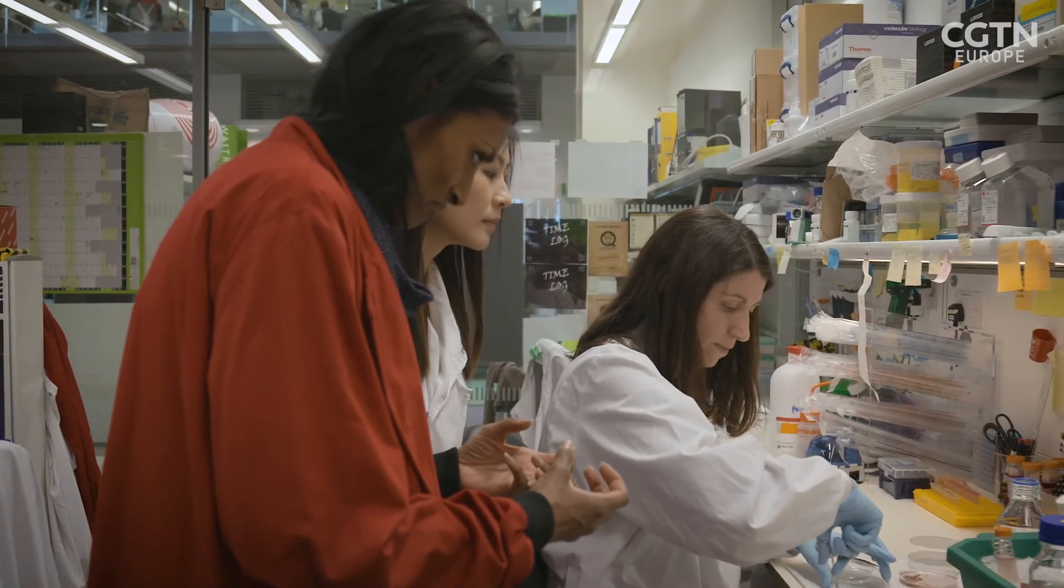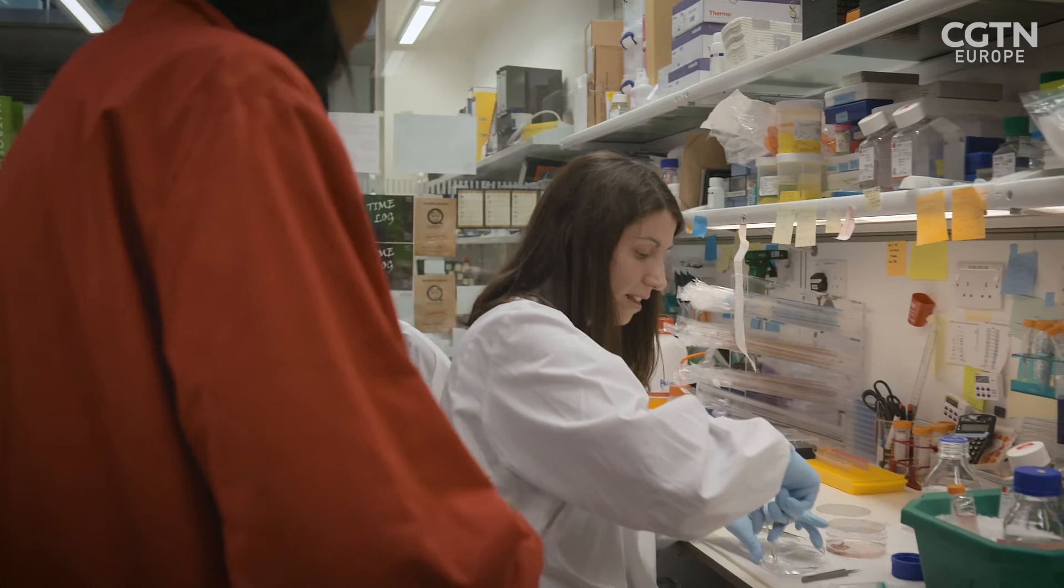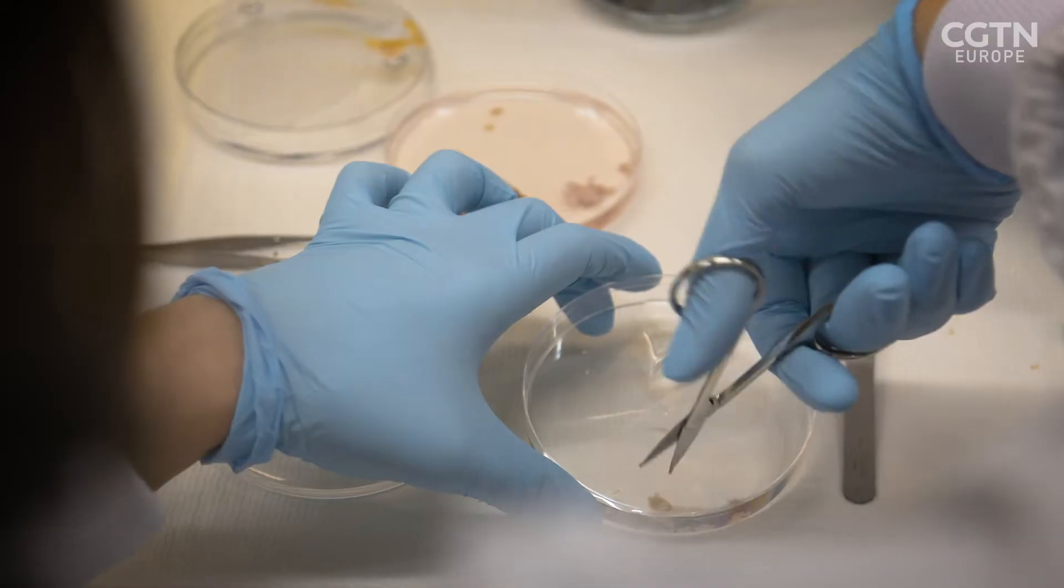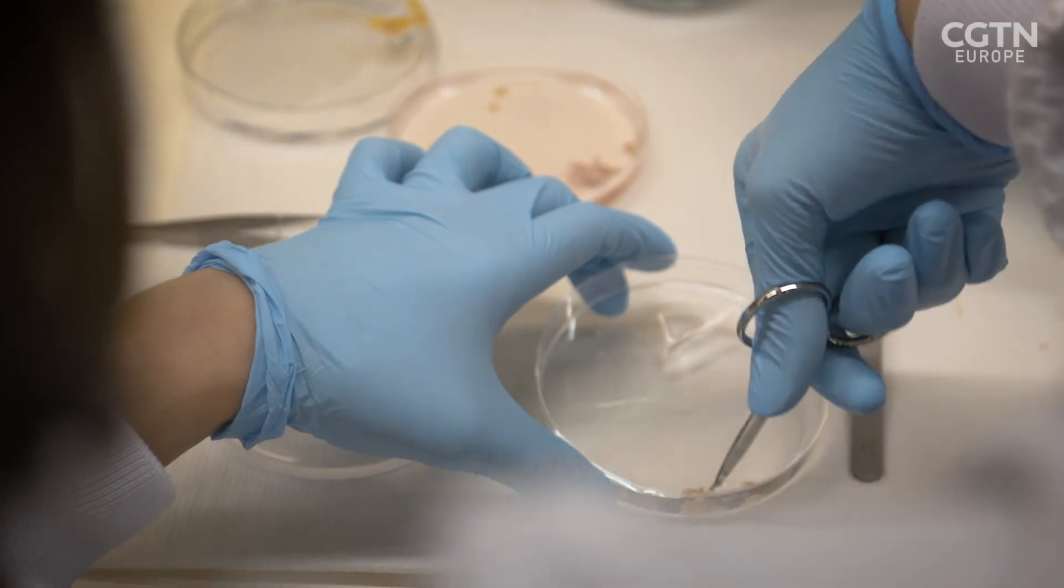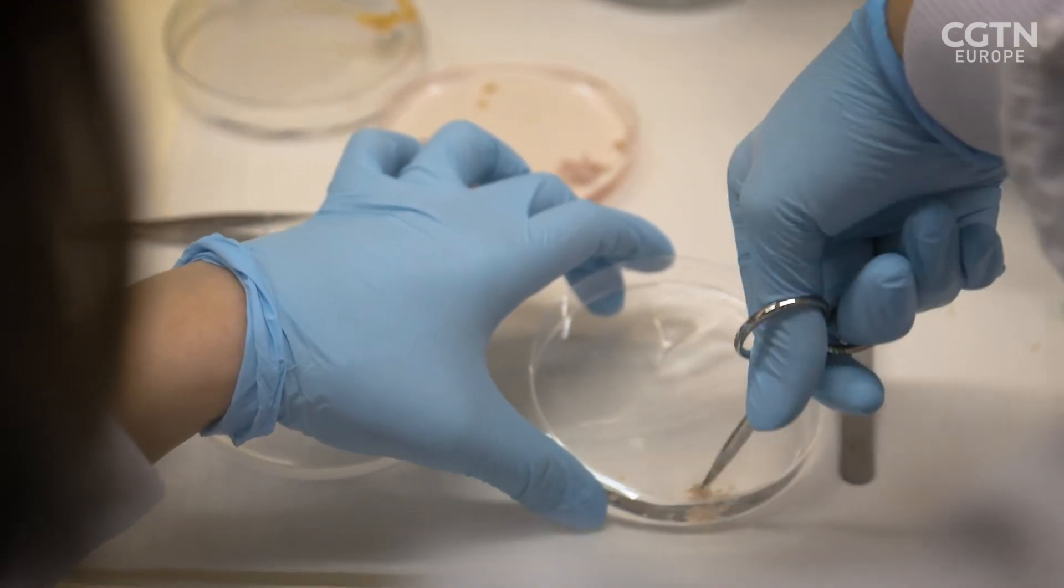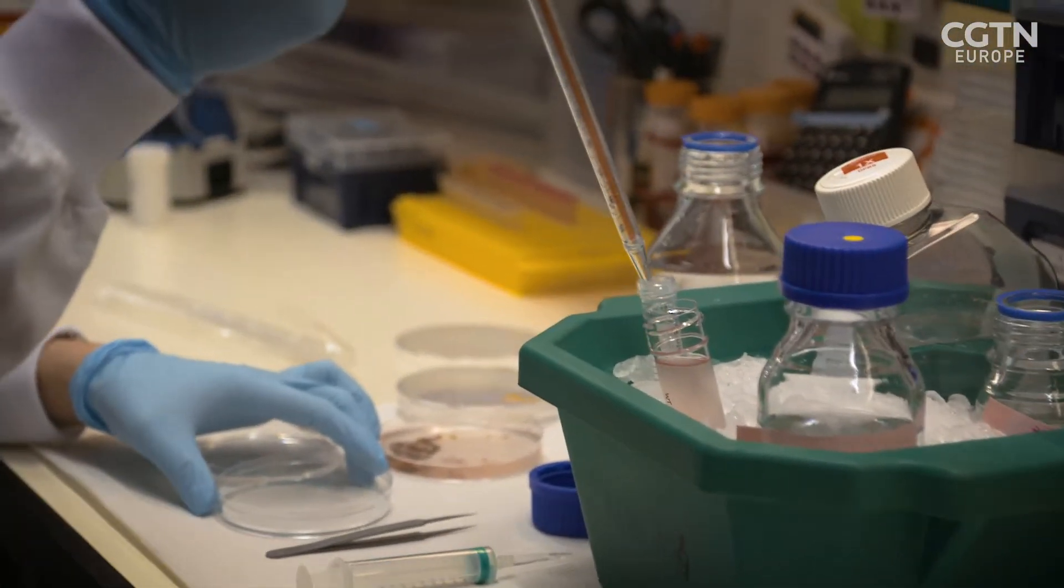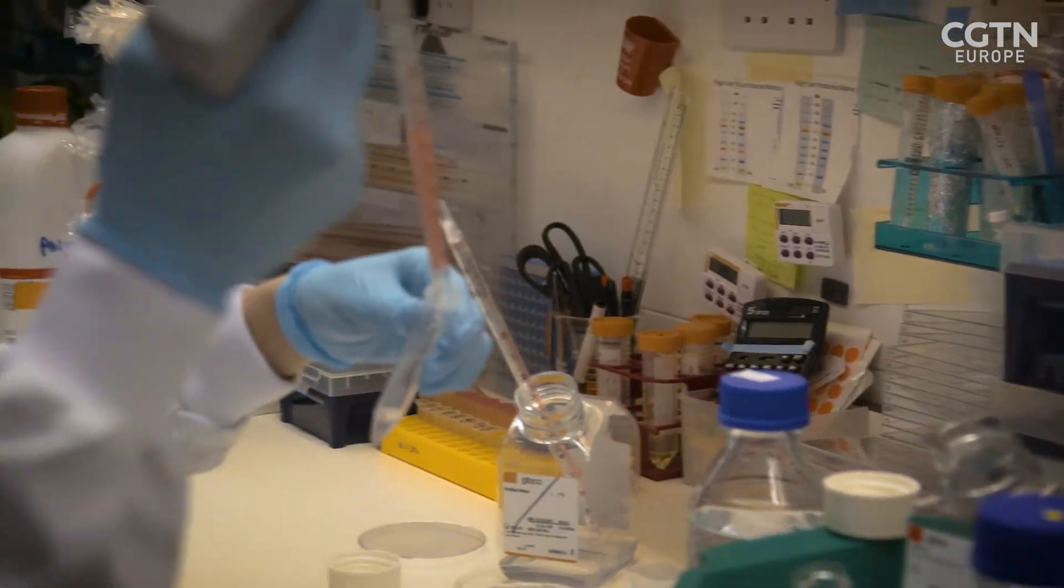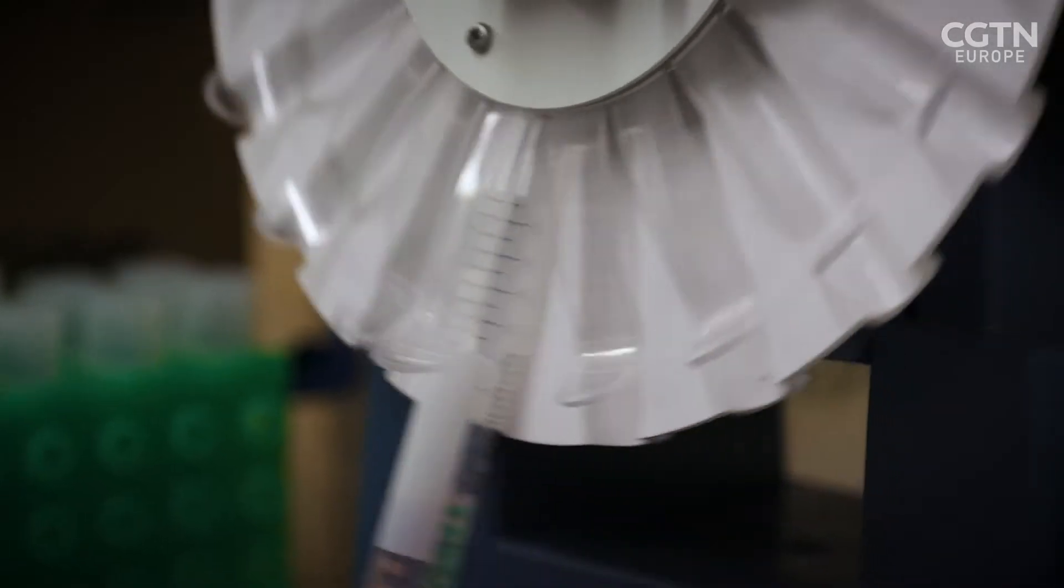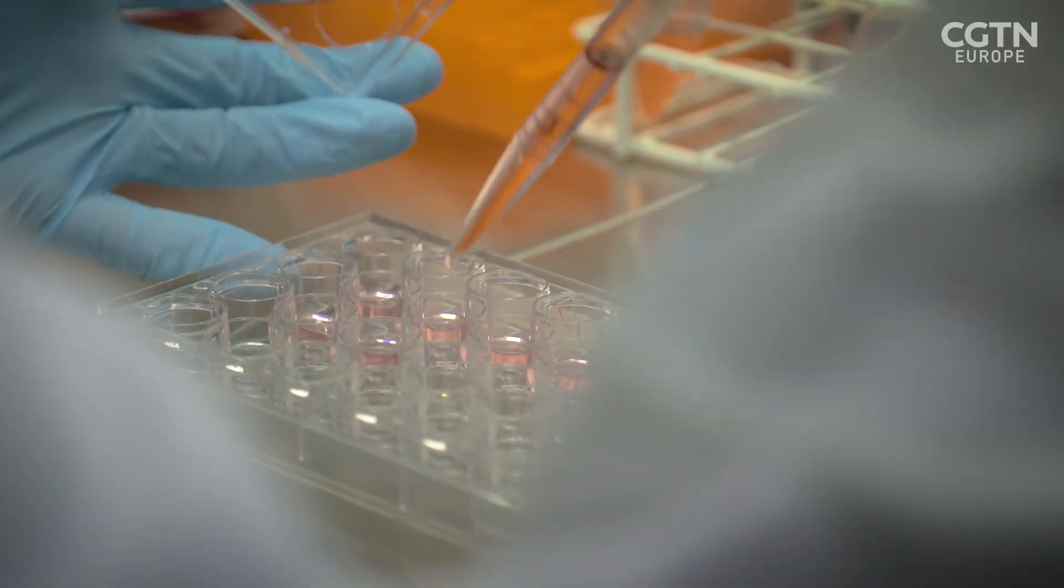You are doing that so that you can grow them further? Exactly. You can maintain them in culture and it's a great model just to study a lot of things. After the mouse gut is dissected into small pieces, they're added to a special solution to detach the stem cells. They're then collected by spinning them in a centrifuge before being added to a collagen-based gel. They are then taken to an incubator to grow into mini-guts.